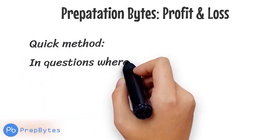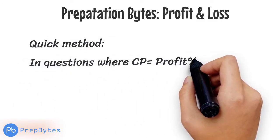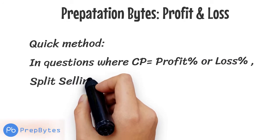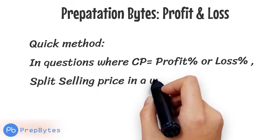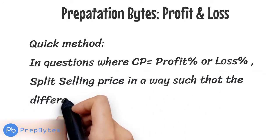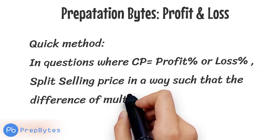In questions where CP equals profit percent or loss percent, split the selling price in a way such that the difference of the multiples is 10.